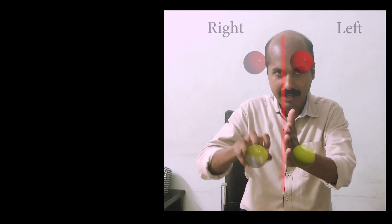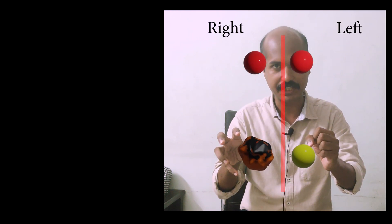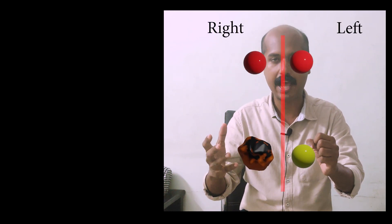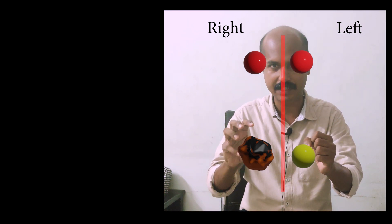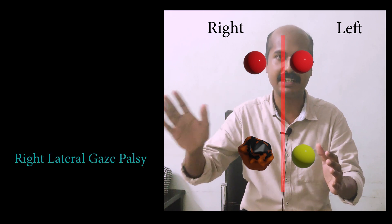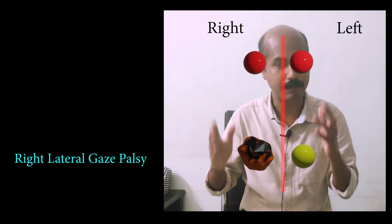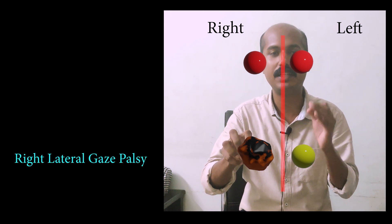Suppose there is a lesion that affects the abducens nerve nucleus of the right side. This is the midline — the right abducens nerve nucleus is affected by a lesion. What can happen if the right abducens nucleus is affected? It will cause a right lateral gaze palsy.